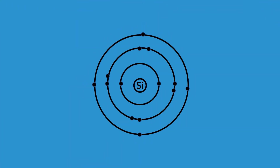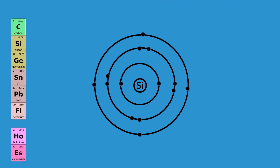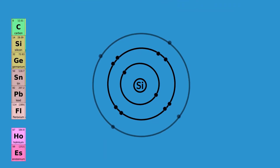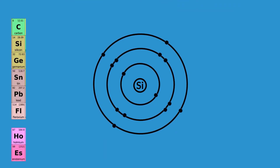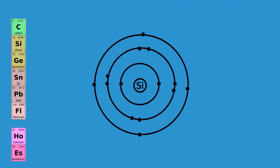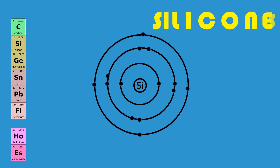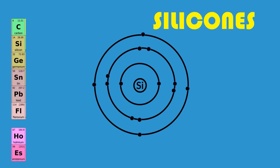Silicon, another element in group 14 of the periodic table, also has four valence electrons and can make large molecules called silicones, but its atoms are too large to fit together into as great a variety of molecules as carbon atoms can.